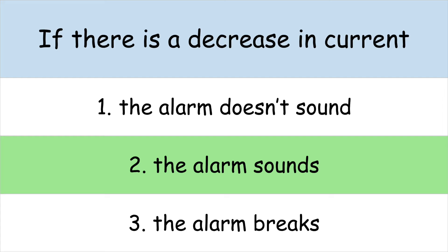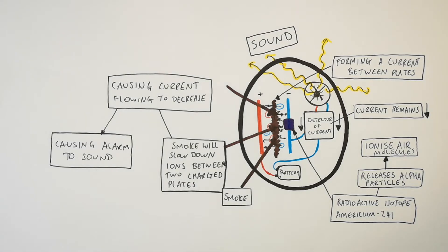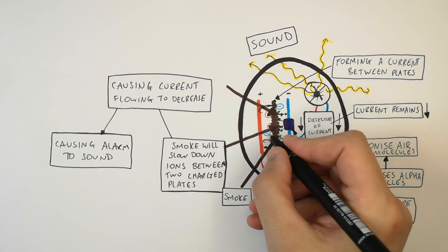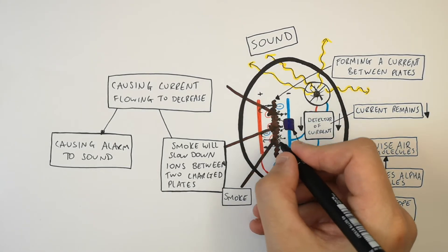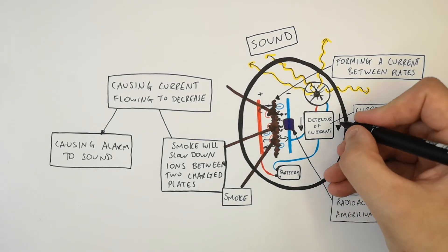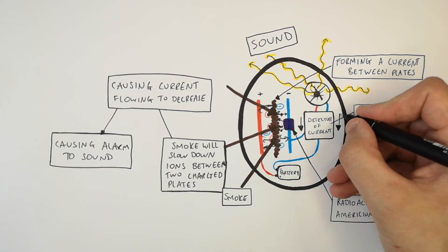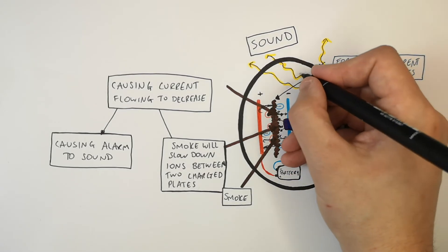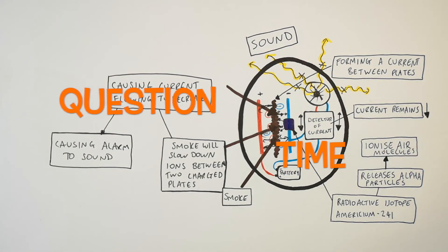To recap: the radioactive isotope americium-241 emits alpha particles which ionize the air molecules between the two plates. This causes a current to form between the two plates, so the alarm is not going to go off because the current remains high.